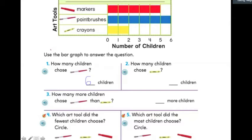The next question says, how many children chose crayons? So, again, I can either count the boxes, one, two, or go to the end of the bar and look down at the number line. And I see two. So, that tells me that two children chose crayons.